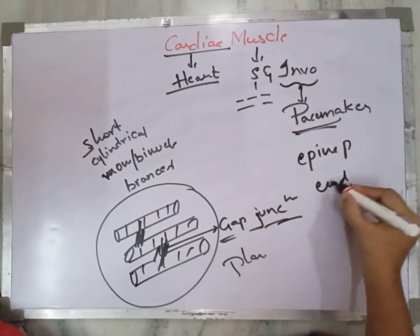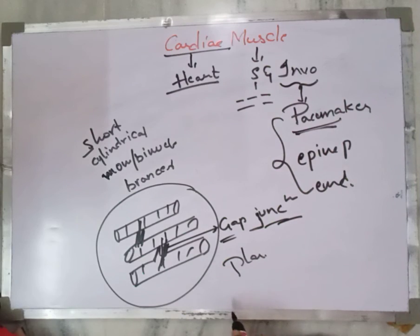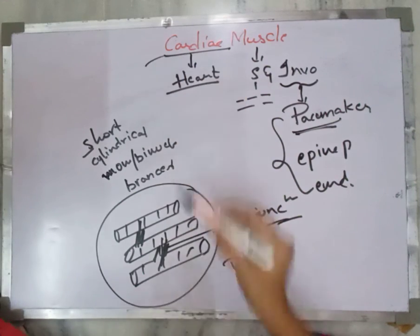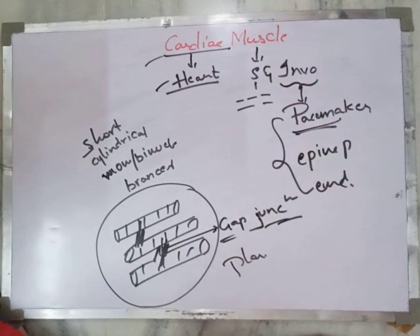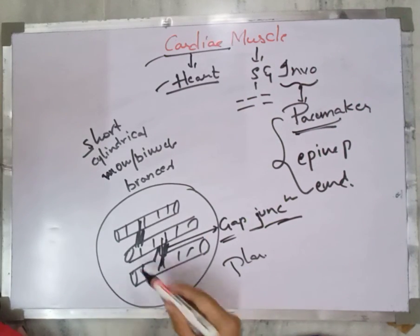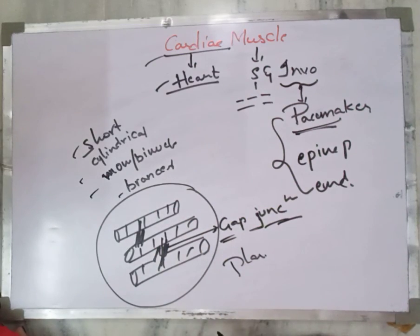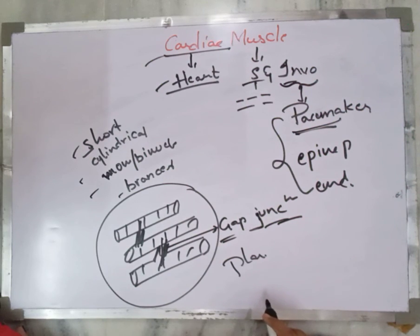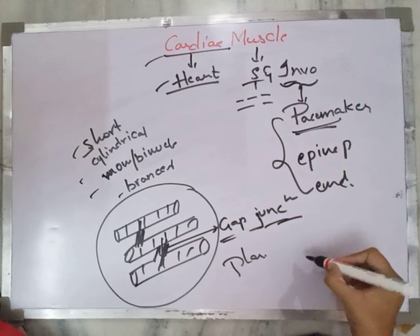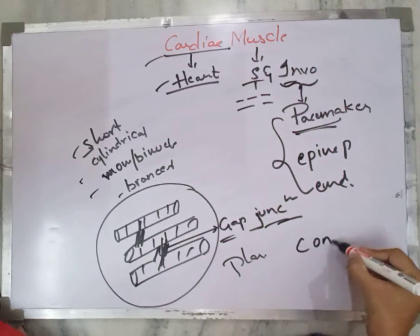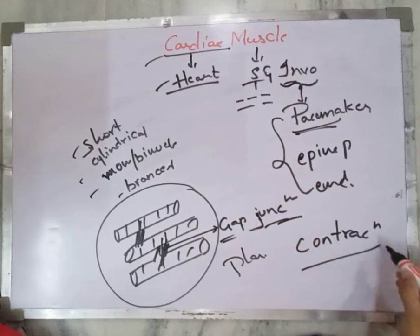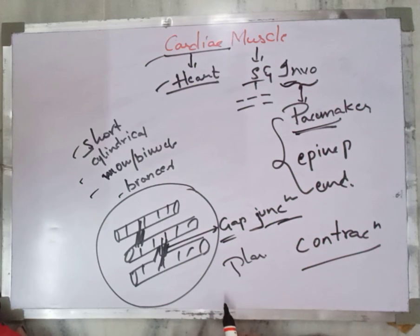The rate of contraction and relaxation of cardiac muscle is directly dependent on hormones such as epinephrine and norepinephrine, as well as the pacemaker, which together control the cardiac muscle's activity. The cells of cardiac muscle are short, cylindrical, mono or binucleated, and branched. It is called a striped and involuntary muscle. Notably, cardiac muscle rarely undergoes fatigue — it only contracts under the required conditions.